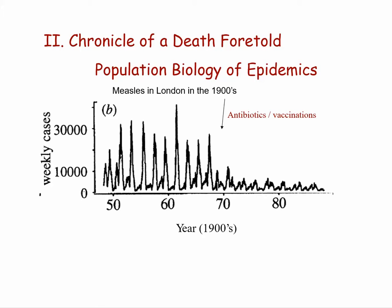We have had 150 years of studying diseases, and a lot of diseases run in periodic epidemics. This graph shows measles in London in the 1900s, how it would crop up three to five times a decade, about every other year, and have big outbreaks. Antibiotics and vaccinations by the 1970s tamped that way down. But the question was, why do you get this sort of periodic pattern to these epidemics?